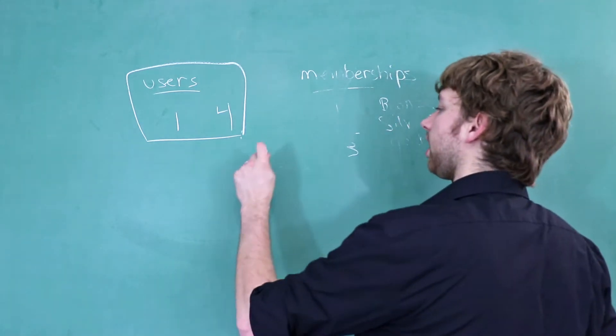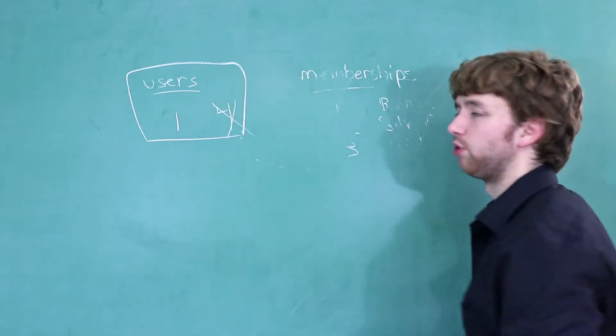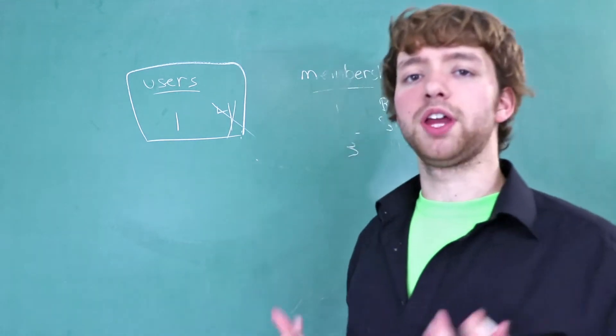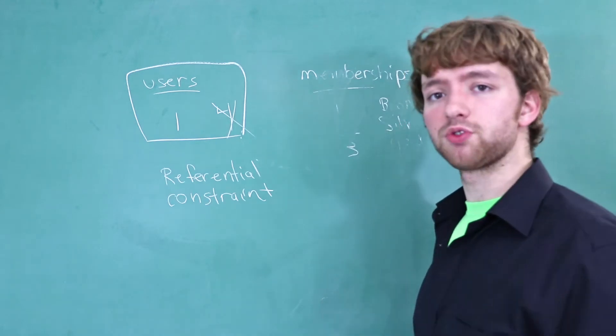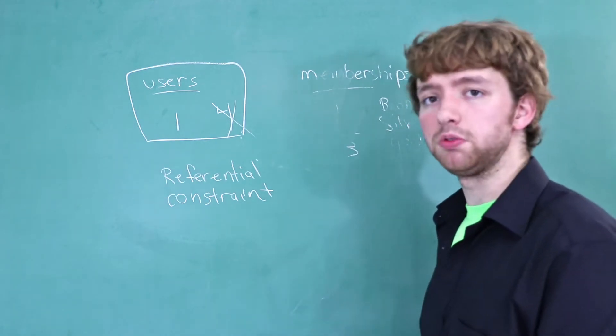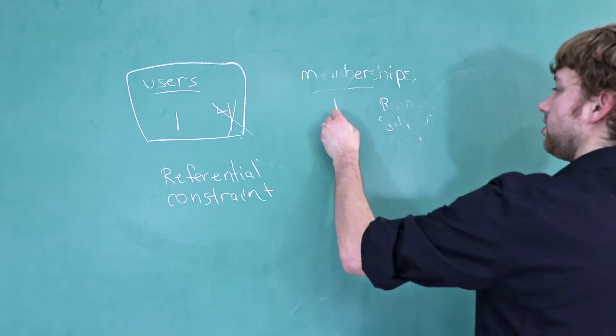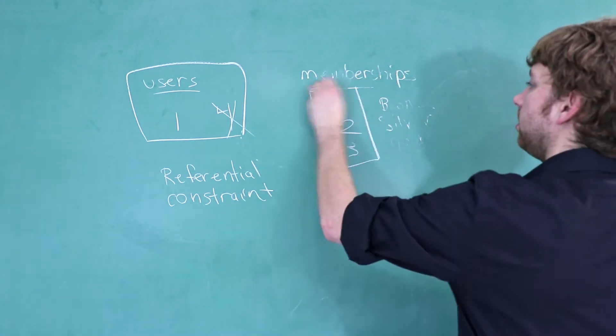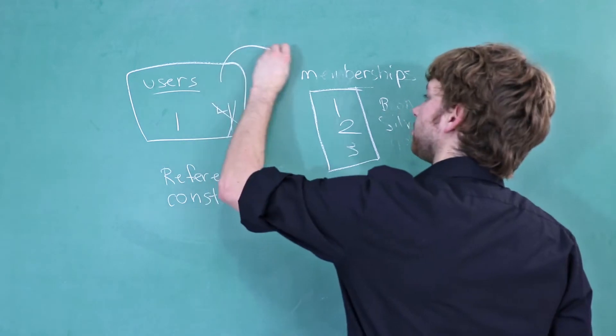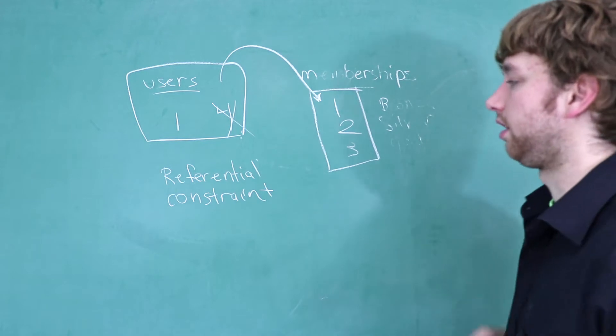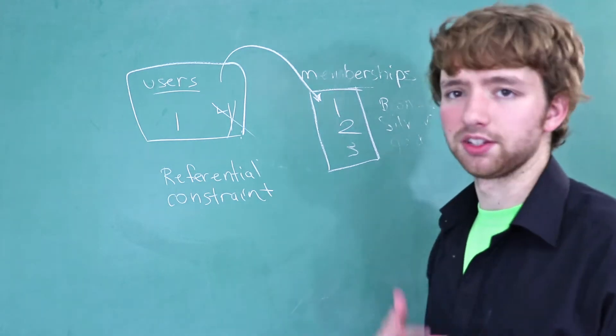Foreign keys are going to be like, no bro, you can't use a four because that doesn't exist over here. So that whole concept is called a referential constraint. A constraint restricts the data to certain values. Specifically values that exist over here as the primary keys, if that's the column we're referencing. So if this column references here, well now we're only allowed to use one, two, or three. But that's not all referential constraints do.